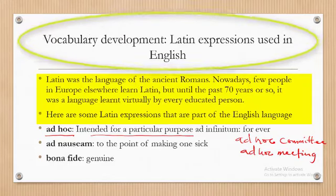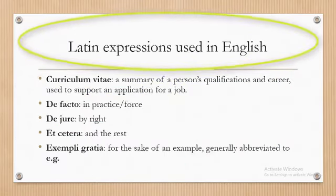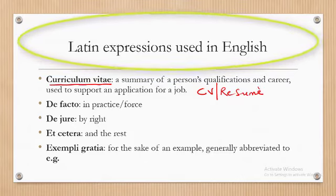'Bona fide' means genuine or original — for example, 'a bona fide student' is a genuine student. 'Curriculum vitae,' abbreviated as CV, is a summary of your qualifications and career, used when applying for a job. 'De facto' means in practice — something that exists practically.